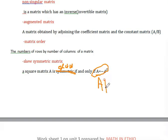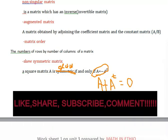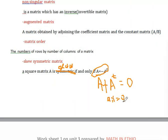A plus transpose of A equals the zero matrix. In a skew symmetric matrix, the diagonal elements are zero.